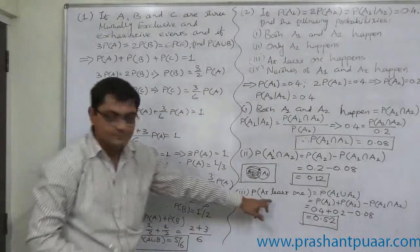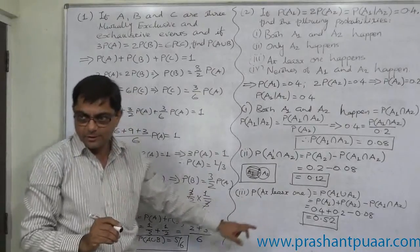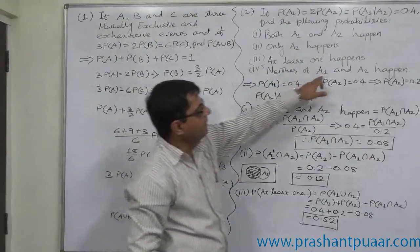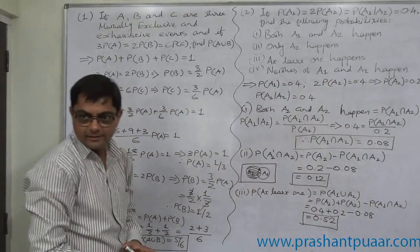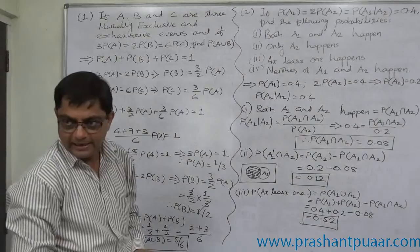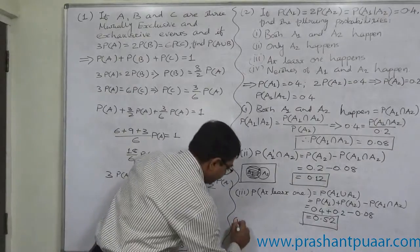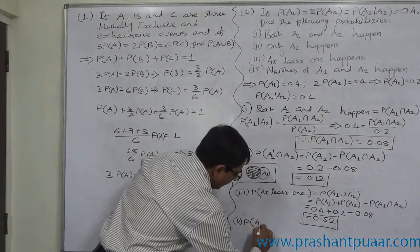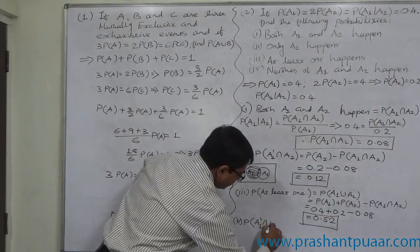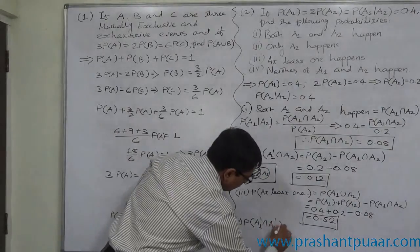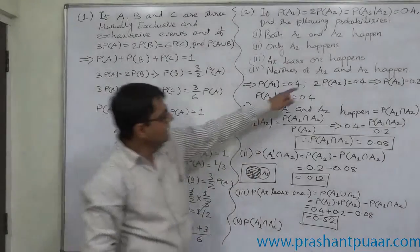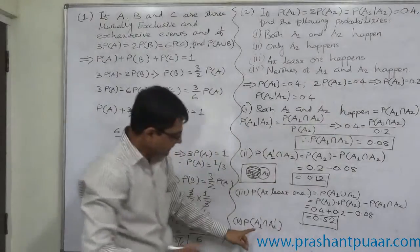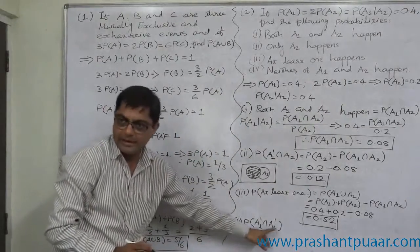At least 1, addition theorem. And the last case, neither of A1 and A2 happen. What should be the sign? Neither of A1 and A2. That means this is the case of probability of A1 complement intersection A2 complement. Neither A1 happens nor A2 happens. That means not A1 and not A2.